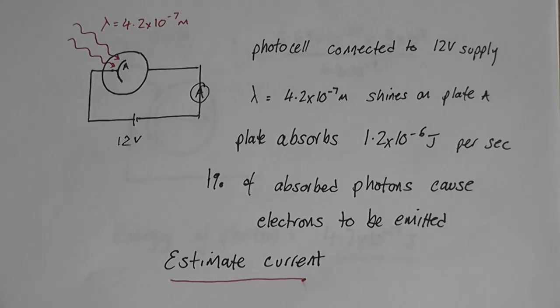This is the solution to AQA paper 482 June 2011 question 4C. The question is: photocell is connected to a 12 volt supply through an ammeter. Light of wavelength 4.2 times 10 to the minus 7 meters shines on the plate.